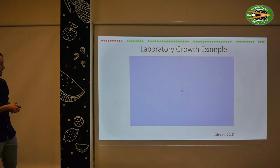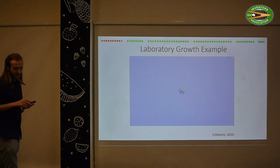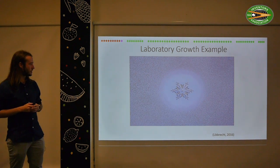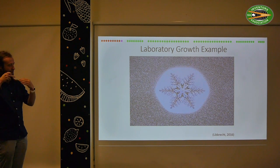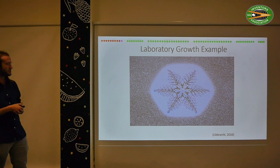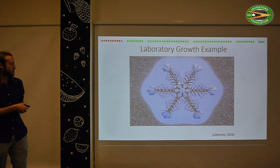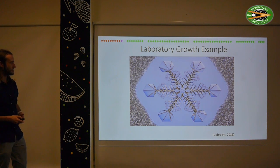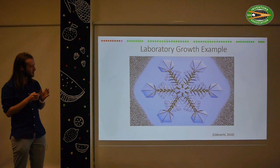This video shows an ice crystal being grown in a laboratory setting by a group at Caltech in America. They can vary the conditions around this ice crystal as a function of time — the temperature and the amount of moisture. As they change those conditions, you can see the way the ice crystals grow actually changes. It started off with a dendrite pattern, but as they changed the temperature, it now forms plates. That's a rather striking example of what's going on in these clouds, but in a much more controlled setting.